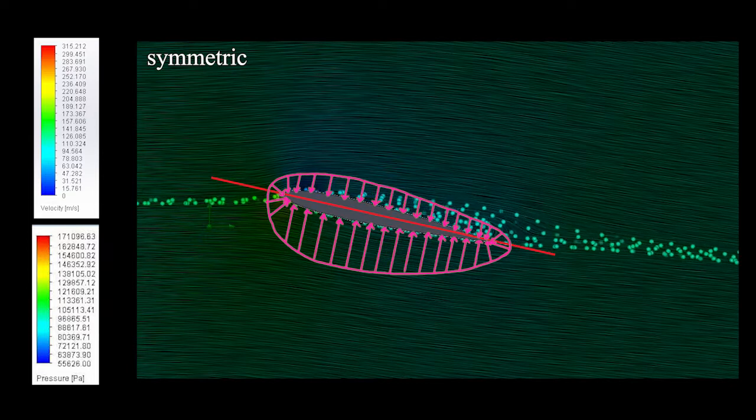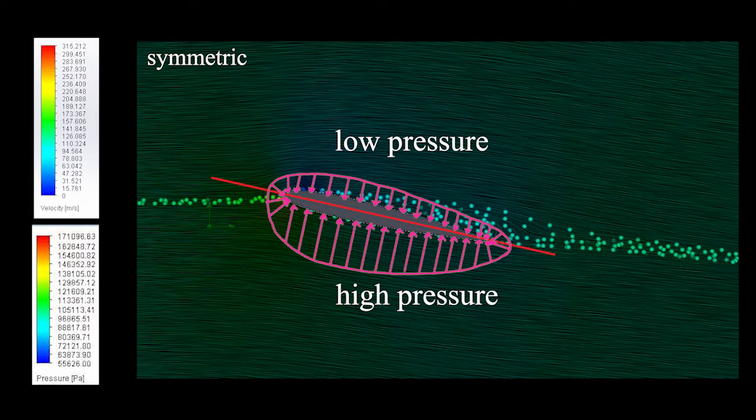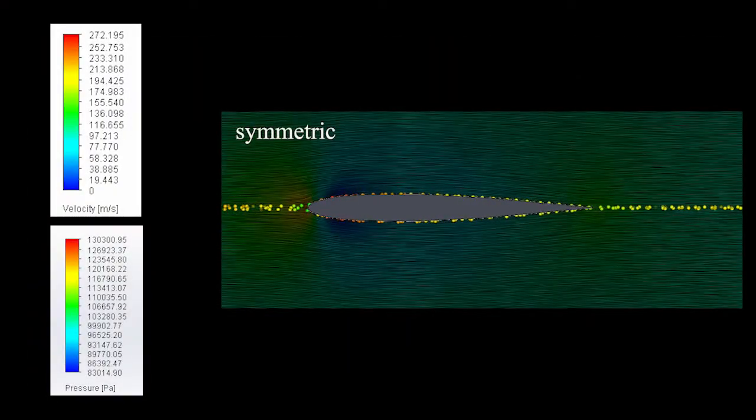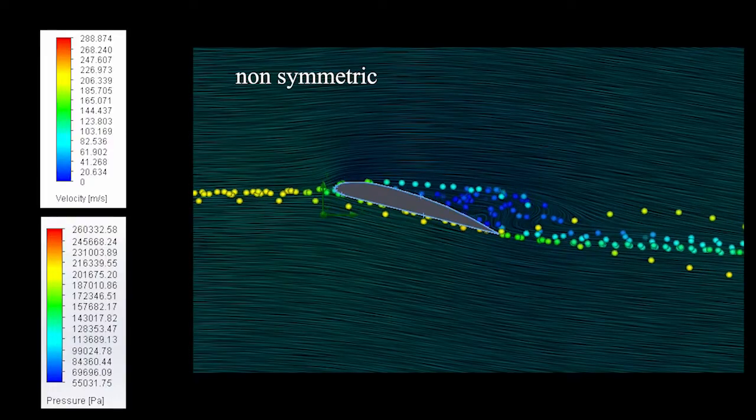They produce a non-symmetrical flow field that leads to low pressure at the top, which is itself a result of flow separation. In addition, altering the airfoil's angle of attack and curvature permits us to control the flying height.